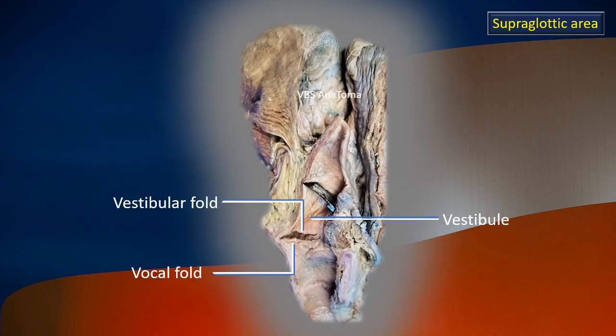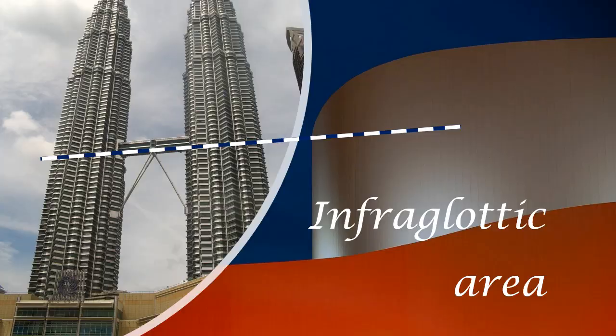A little more points: there is a vestibular fold above and a vocal fold below. That slit-like cavity between them is the ventricle of the larynx.